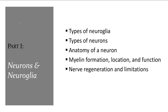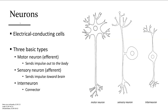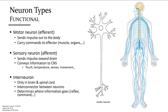We're going to look at the different types of neuroglia and neurons and basic neuron anatomy. A neuron conducts electrical impulses. There are three basic types of neurons: motor neurons, sensory neurons, and interneurons.